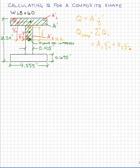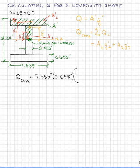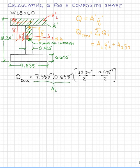Let's go ahead and begin to put some numbers into this equation. If we want to calculate the first moment of the outward area at the neutral axis, the area of piece number one is the width of the flange, 7.555 inches, times the thickness of the flange, 0.695 inches. Now we need the distance from the neutral axis of the entire cross section to the centroid of that shape — that would be 18.24 inches divided by 2, getting half of the total depth, and then subtracting off half of the thickness of the flange.